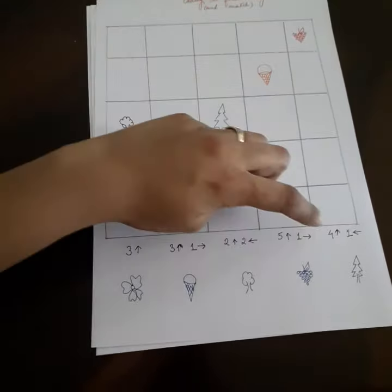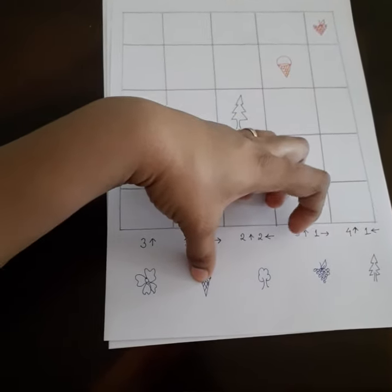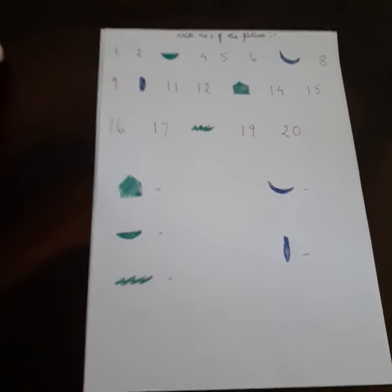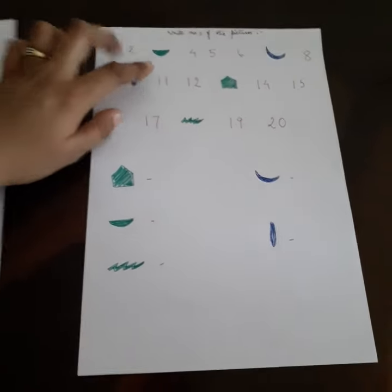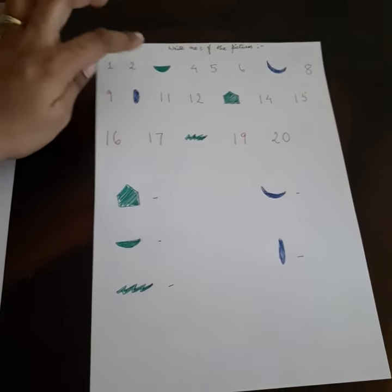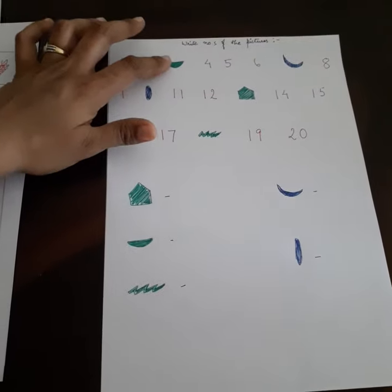The next sheet is about missing numbers in coding. I have drawn a few pictures for the missing numbers. The kid has to find what number is missing and then write it for the picture.